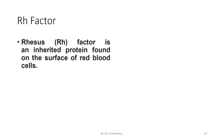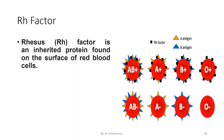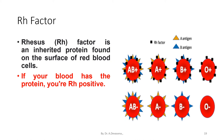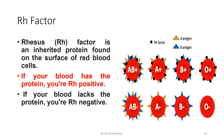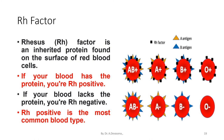RH factor is an inherited protein found on the surface of red blood cells. Here is a representation of the blood groups, having RH factor antigen that is A antigen and B antigen. If your blood has the protein, the RH factor is positive — meaning protein is present on the surface of the red blood cell. If your blood lacks the protein, you are RH negative — meaning there is no protein on the surface of the red blood cells. RH positive is the most common blood type.